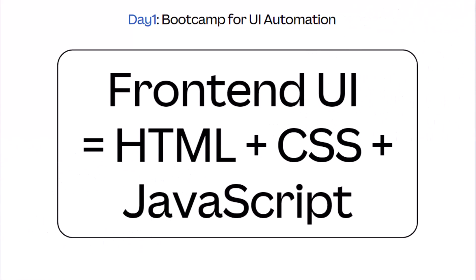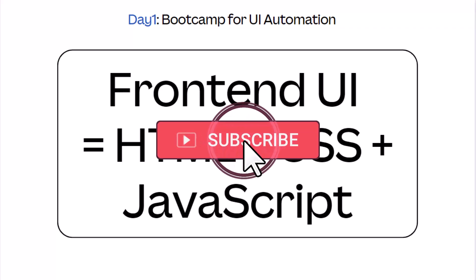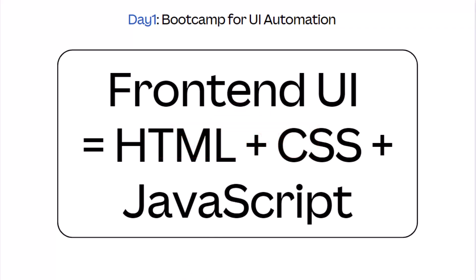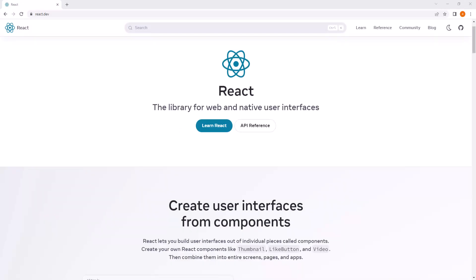Welcome to day one of the boot camp for UI automation. Today we will start with the most important topic: the front-end UI and the basic tools used to create front-end applications. The question also arises: why, as an automation engineer, do we need to know about this? This is because XPath works on HTML, CSS paths work on CSS.